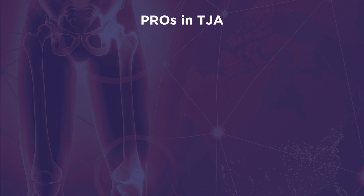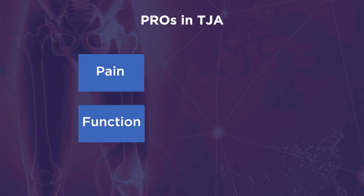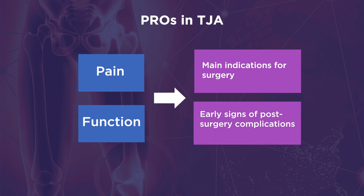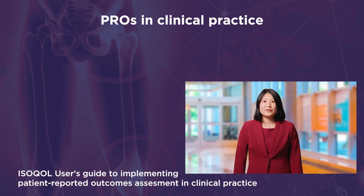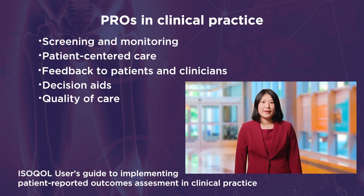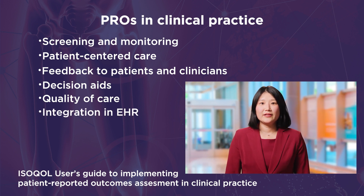Total joint arthroplasty, or TJA, registries broaden their focus to PROs both before and after surgery. This is because pain and functional limitations are the main indications for surgery and could also be early signs of post-surgery complications. PROs are used for several purposes in orthopedic practice, for example as screening tools or patient-centered care with feedback of PRO results to patients and clinicians. PROs should ideally be integrated in the electronic health records to monitor recovery of function and pain relief after surgery over time.